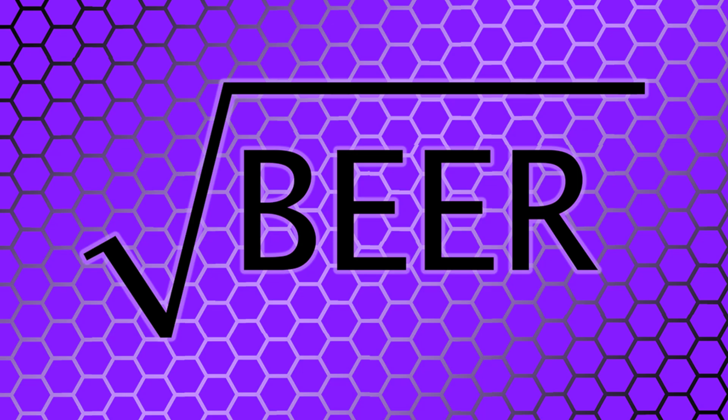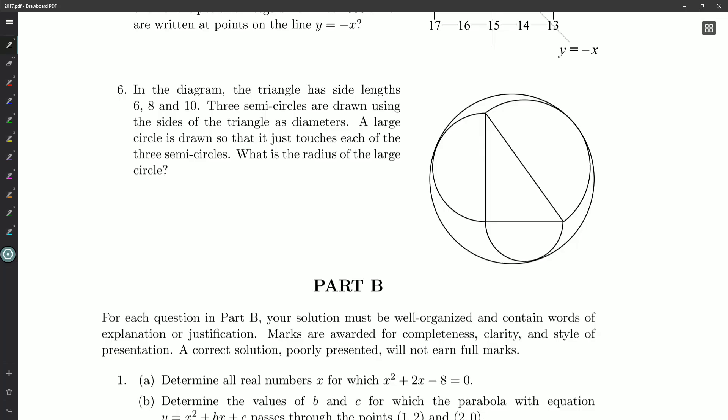Hello, ladies and gentlemen, Rootbeer here, and I'm just as excited as you are to take a look at A6 on our 2017 senior paper. In the diagram, the triangle has side lengths 6, 8, and 10, and I'm just going to guess 6, 8, and 10 here. I recognize these as giving me a nice little right angle. These are a Pythagorean triple.